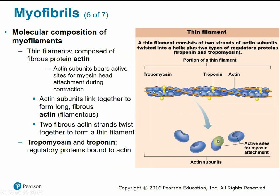The thin filament is a fibrous protein called actin with individual subunits containing binding sites for myosin — the myosin heads attach to actin at these active sites. There are also two regulatory proteins associated with actin: troponin and tropomyosin. The tropomyosin protein covers and blocks the binding sites, preventing muscle contraction. The signal to unlock these active sites is calcium — calcium binds to troponin, causes it to change shape, and moves the tropomyosin out of the way, allowing crossbridge formation and muscle contraction.